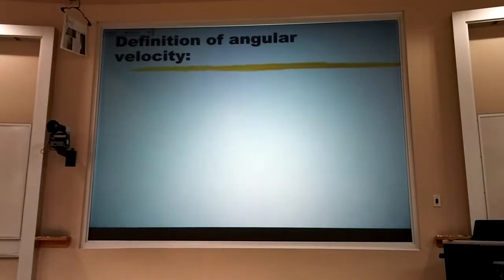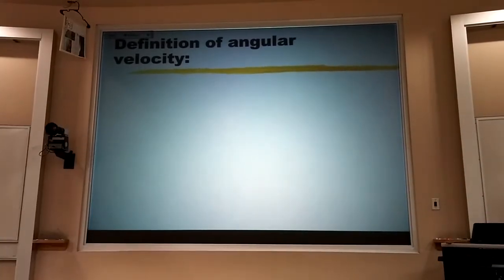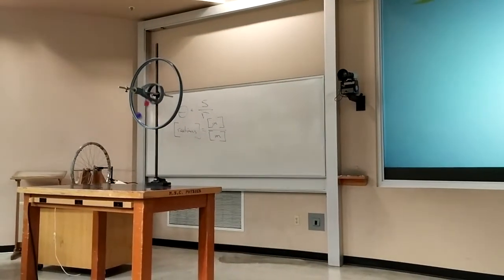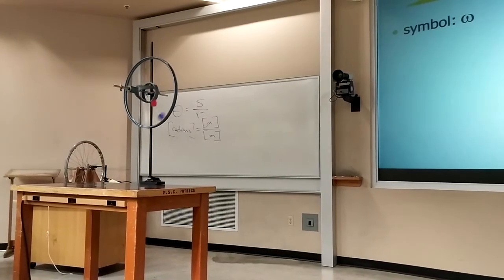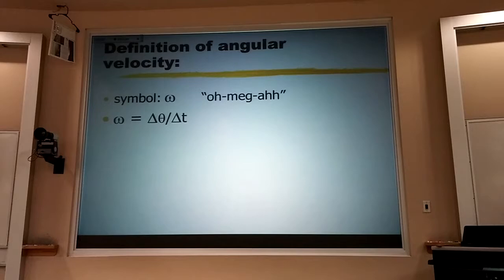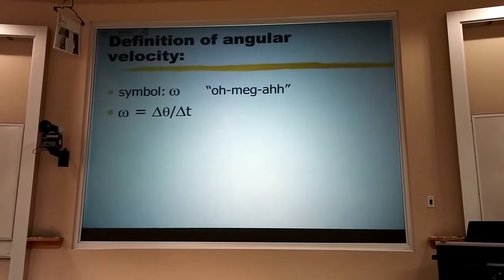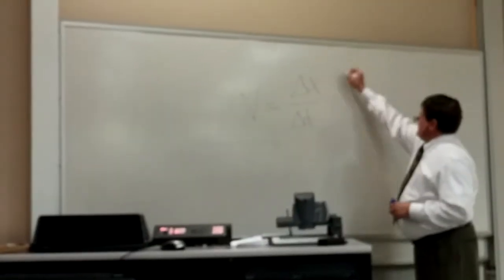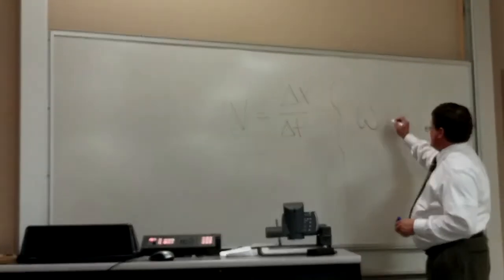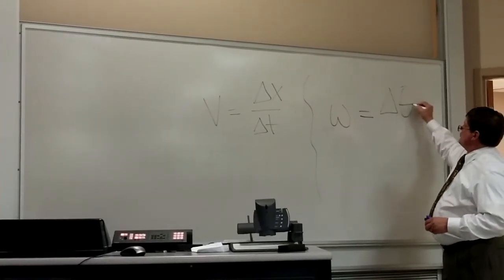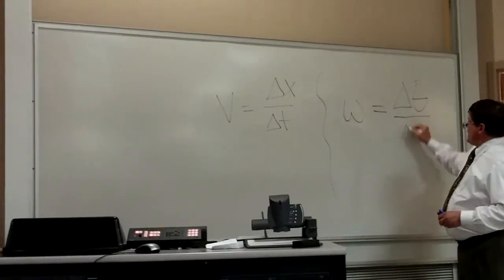Now, let's talk about angular velocity. We call it omega — that's the Greek symbol omega, not a W. The operational definition should look familiar. When we talked about linear velocity, the magnitude was just how far you got down the road divided by how many seconds it took. With angular velocity, instead of how far down the road, it's how far around you get in radians, divided by how much time it takes.